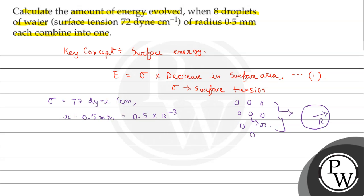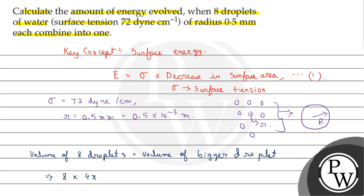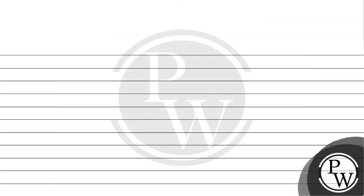The bigger droplet radius is capital R and smaller droplet radius is small r. We can say volume of 8 droplets equals volume of the bigger droplet. So: 8 × (4π/3) × r³ = (4π/3) × R³. Solving further, R³ equals 8r³, which gives R equals 2 times small r.